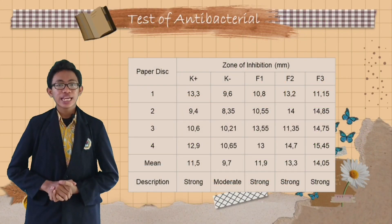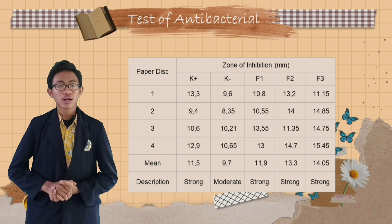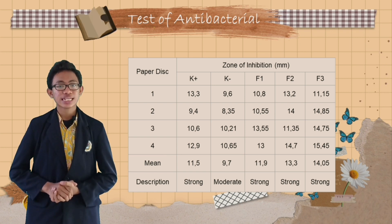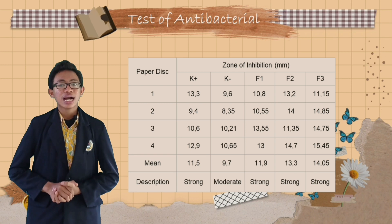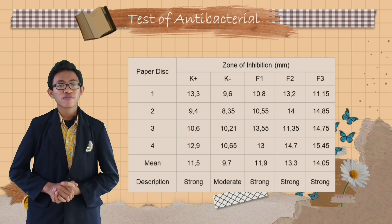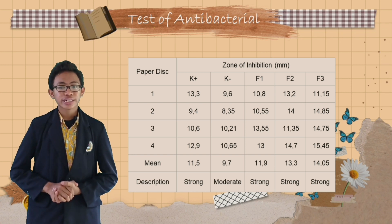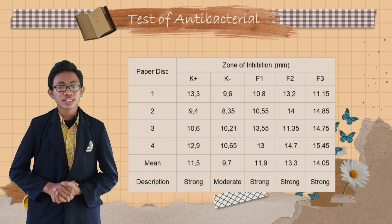The antibacterial test aims to determine the effectiveness of the inhibitory power of Majacentia antiseptic liquid soap against E. coli bacteria. The results showed that Formulation 3 had the largest average inhibition zone of 14.05 mm, which was categorized as strong according to Davis Institute 1971, as cited in Tim Pudus et al.